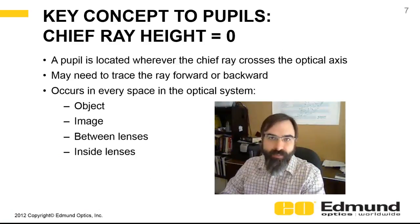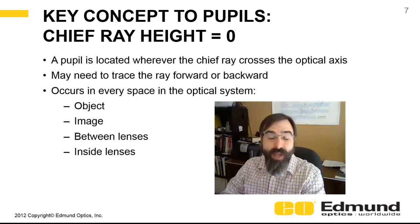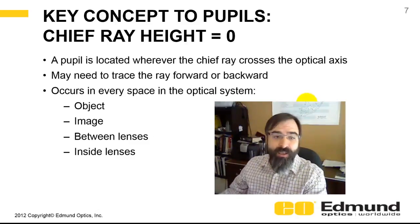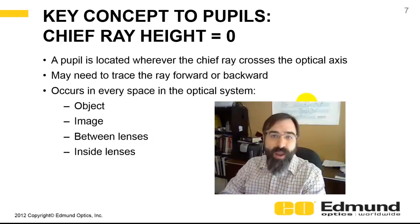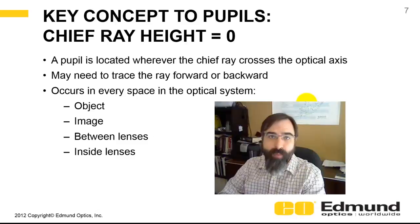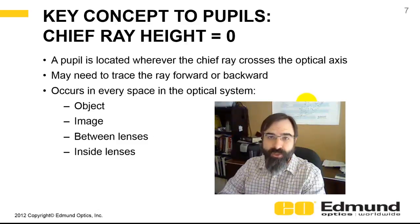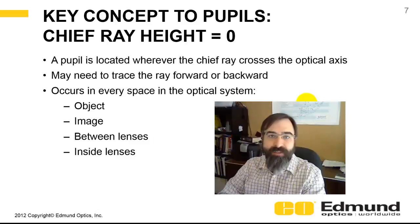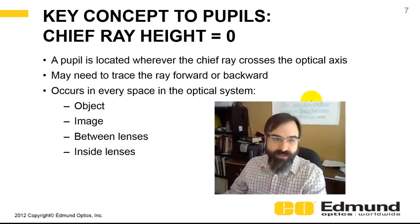The key concept to understanding pupils is you trace the chief ray. Wherever that chief ray equals zero, that is where the stop or the pupil is located. Even if the chief ray doesn't appear to cross the axis, you can trace it forwards or backwards to see where it crosses the optical axis — that is the location of the pupil. This occurs in all spaces: object space, image space, in between lenses, even inside of lenses.